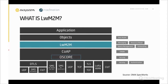LwM2M runs on top of CoAP. CoAP is an adaptation of the HTTP transfer protocol for constrained environments — a lightweight, binary-encoded protocol that is interoperable with HTTP via proxies that translate CoAP messages to HTTP and back. REST requests exchanged over HTTP can also be easily translated to CoAP messages. CoAP also includes OSCORE, a security protocol providing end-to-end encryption at the application layer.